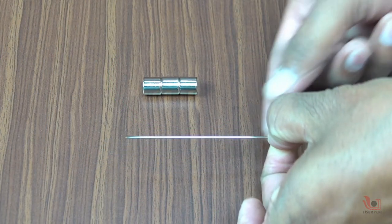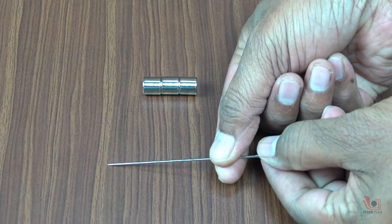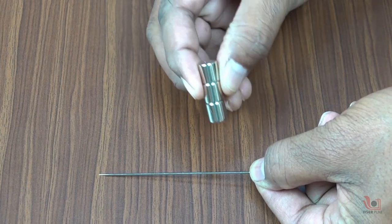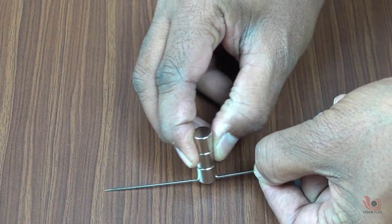Take a strong magnet and rub it on the needle several times by using a single touch method. Let's understand what the single touch method of magnetization is.